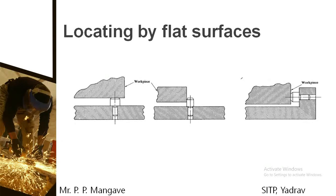Locating by flat surfaces: whenever you have to locate a surface by using a conical pin, cylindrical pin, or any other type of locating device, first you have to consider which is the most flat surface of that workpiece, as that can be used for properly locating the workpiece. During the locating principle, you have to use the 3-2-1 principle so that the complete degrees of freedom are arrested and the machining surface is left free for machining.